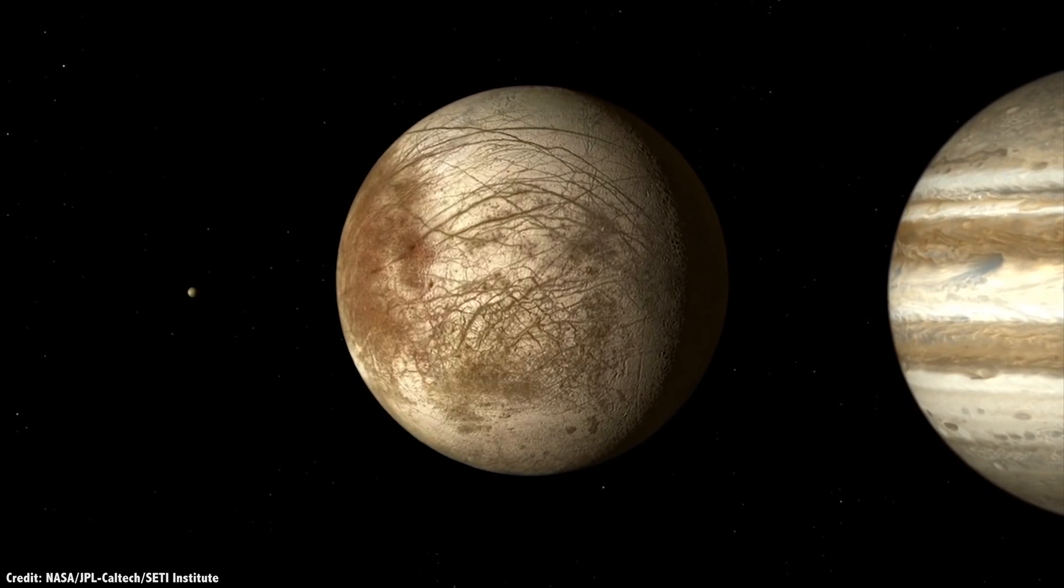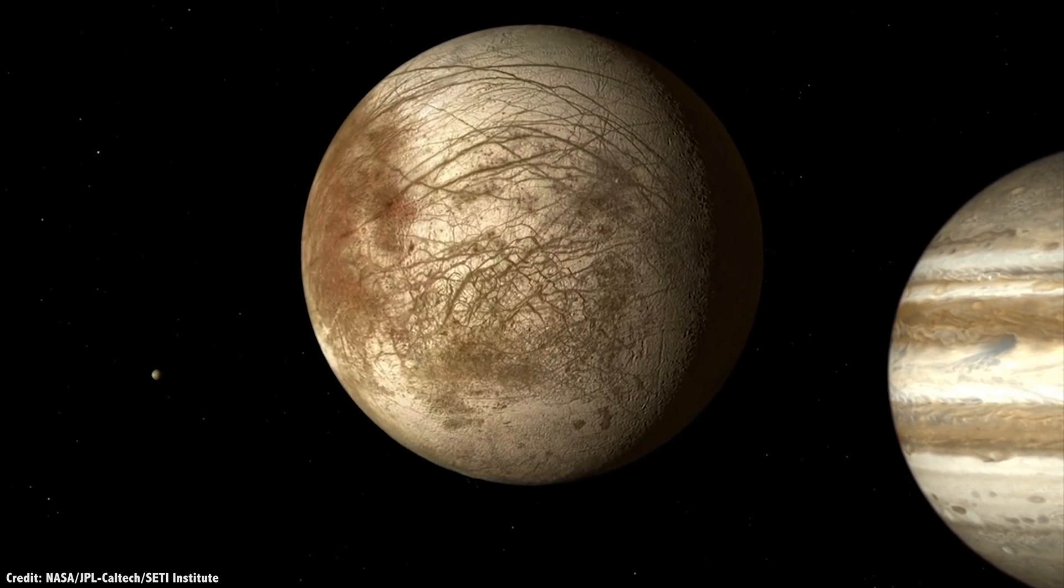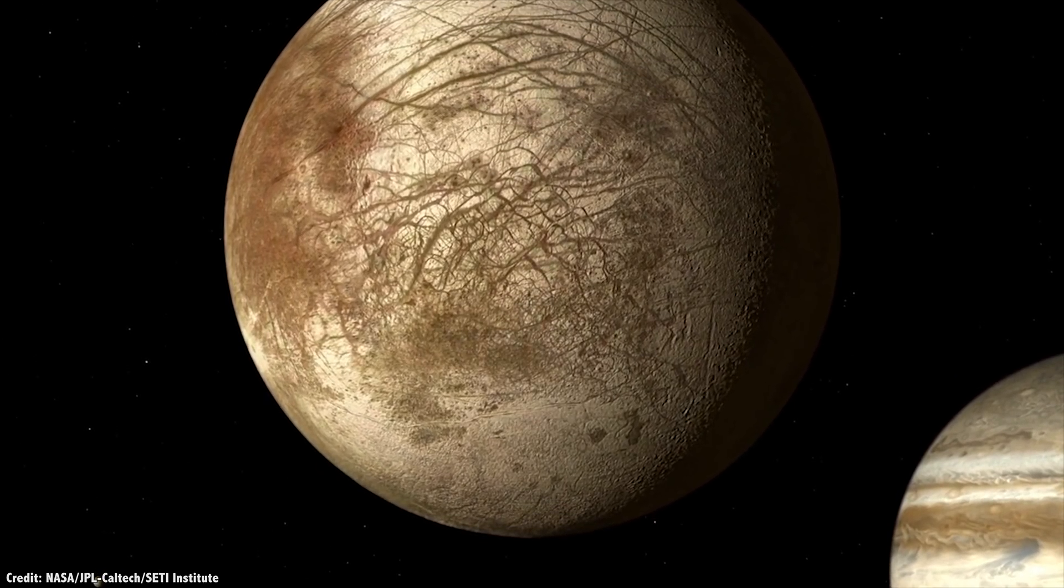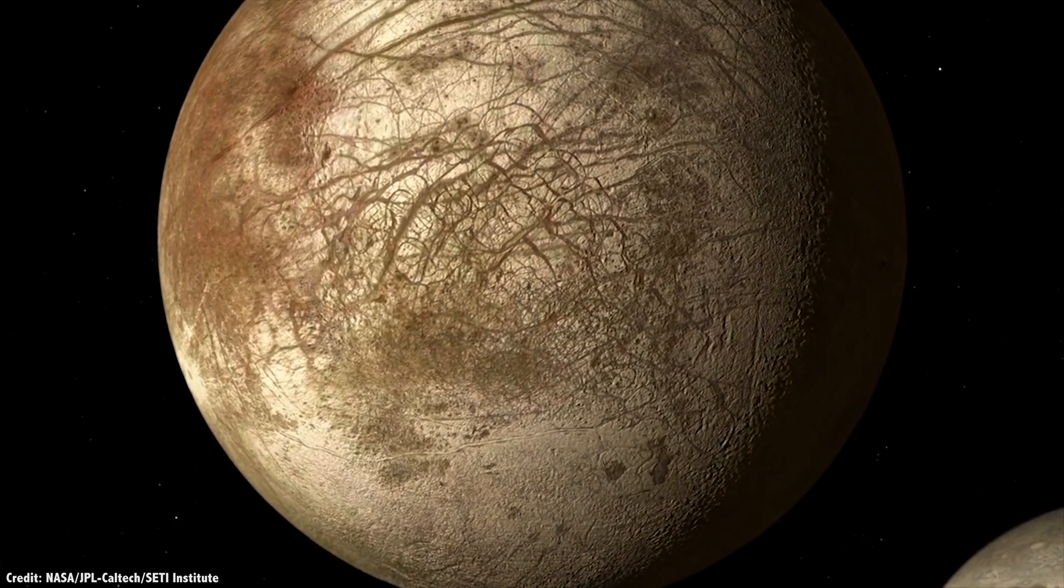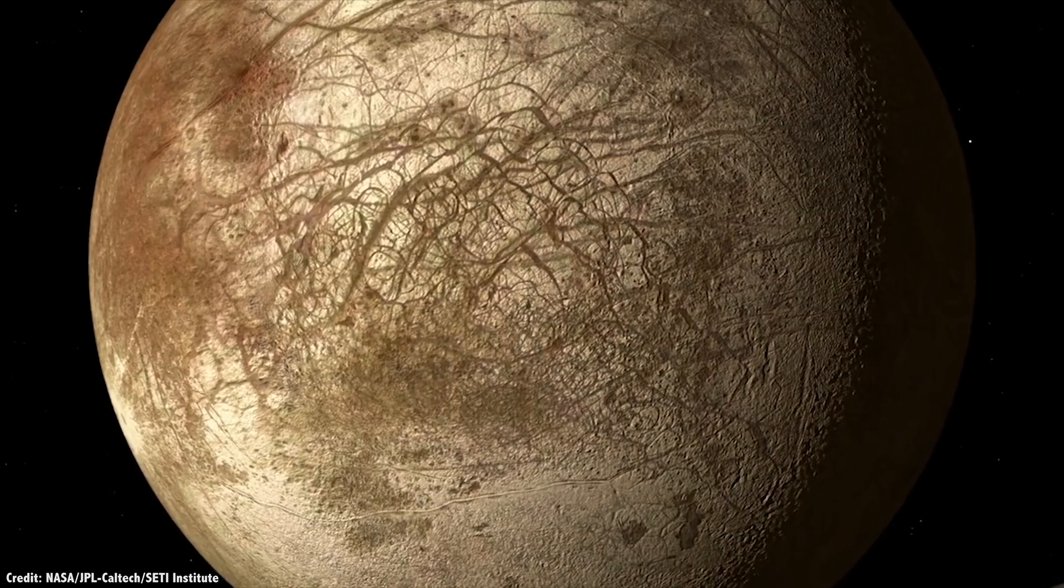Once they arrived at Europa, the landers would touch down at 45 degrees south of the equator. Their highest priority would be to start drilling into the ice immediately.